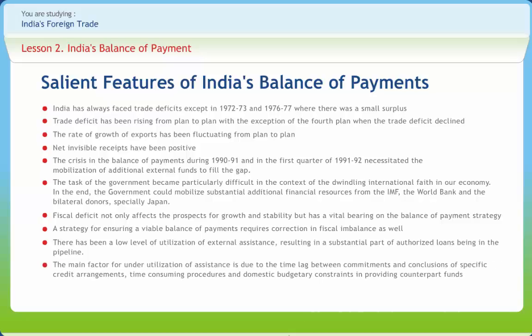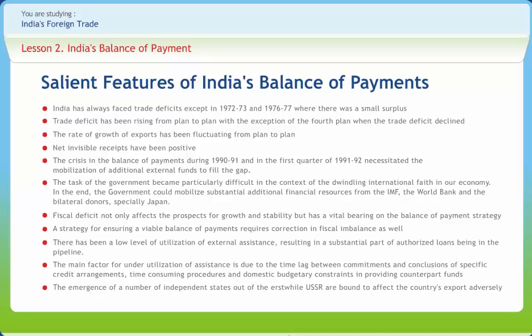The main factor for underutilization of assistance is due to the time lag between commitments and conclusions of specific credit arrangements, time-consuming procedures, and domestic budgetary constraints in providing counterpart funds. The emergence of a number of independent states out of the erstwhile USSR is bound to affect the country's exports adversely. Thus India's balance of payments continued to be under strain. The falling support from net invisible receipts resulting from interest payments, the poor industrial and export performance, and high rate of inflation stood in the way of achieving a sustainable balance of payments.